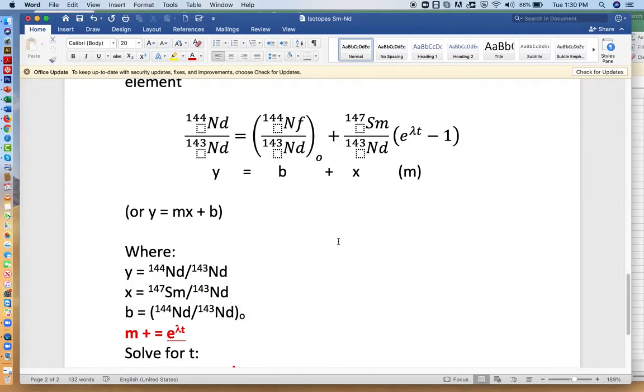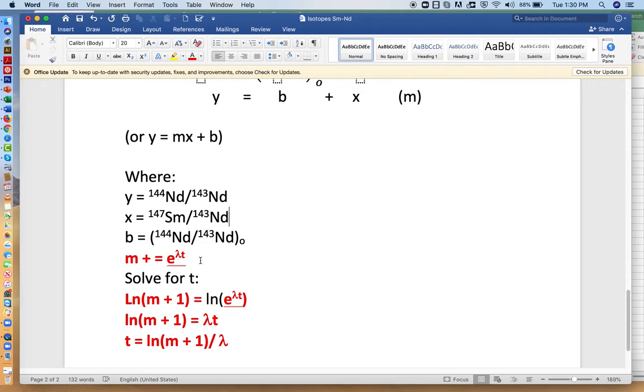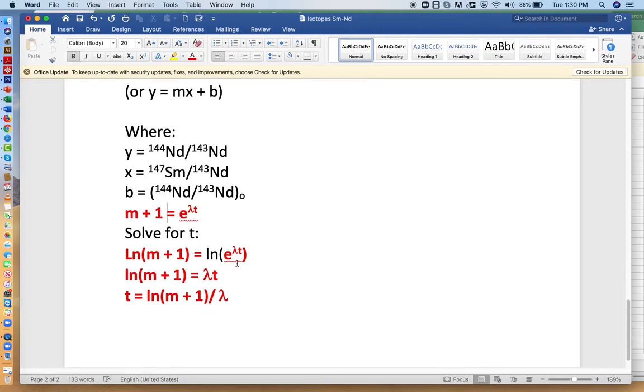This document, by the way, would be posted on Canvas. And then we have the same equation as we had before, m plus 1 is equal to e to the lambda t. And then we'll solve to get time. All right. So in the next video, what we'll do is we'll take a look at the Excel spreadsheet, where I'm going to give you some data from the Tuolumne intrusive complex.